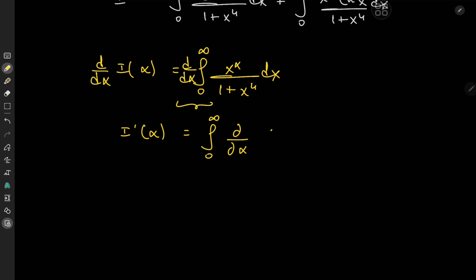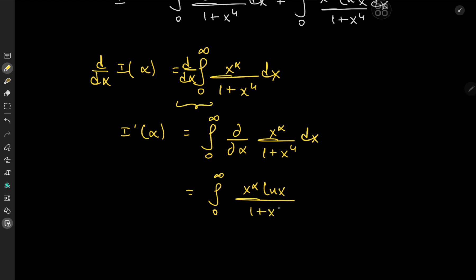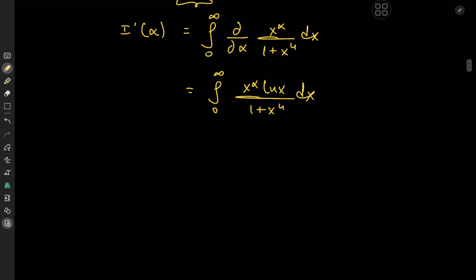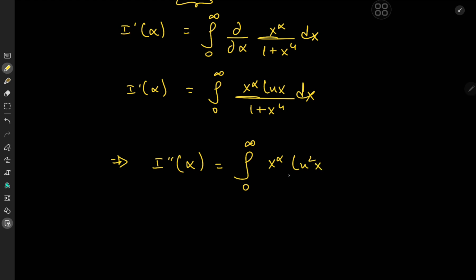On the right, after switching the order of integration and differentiation operators, we take the partial derivative with respect to α of x^α over (1 + x⁴). Carrying out the differentiation gives us x^α times log(x) divided by (1 + x⁴) dx. We've recovered a log term, but we need another logarithm to get log squared, so we differentiate again to get I''(α) equal to the integral from zero to infinity of x^α times log²(x) over (1 + x⁴) dx.